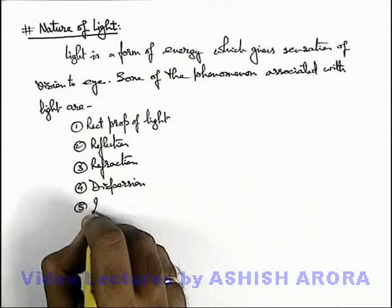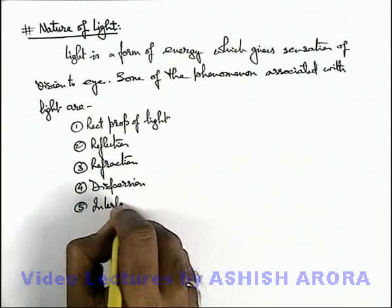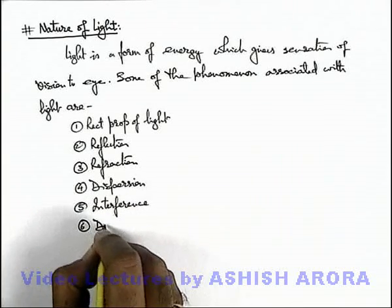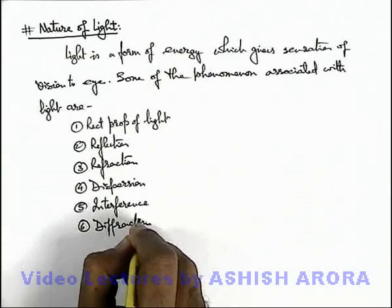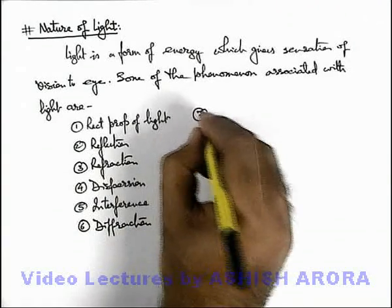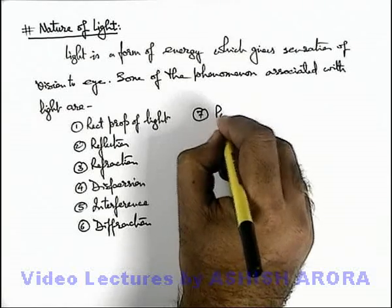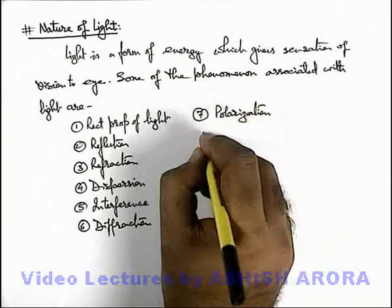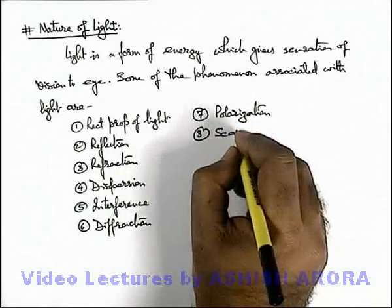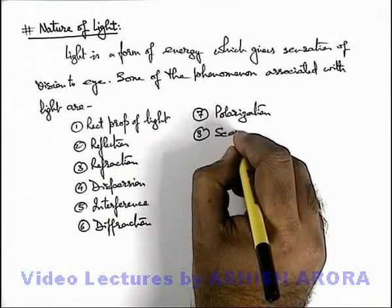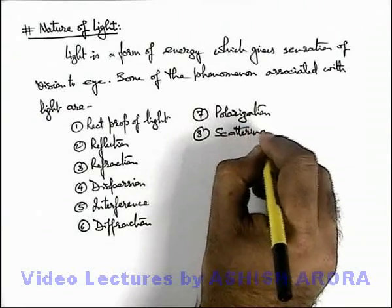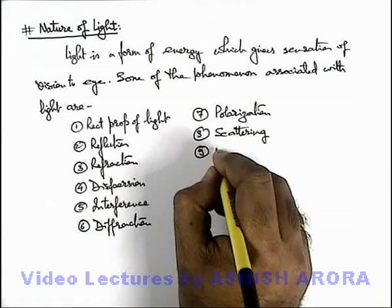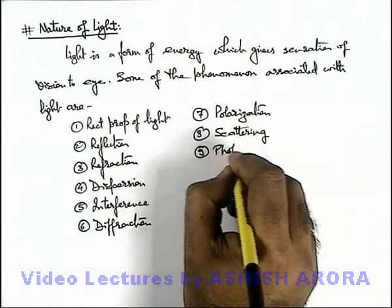In this section we'll study in detail about interference of light. In coming sections we'll study about diffraction of light. Another one we're also going to study is polarization of light. Another, which is not right now in our syllabus but in the advance section we'll study, is scattering of light. And in modern physics we'll study the phenomena related to light, that is the photoelectric effect.